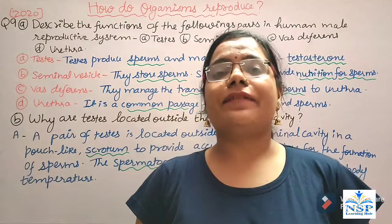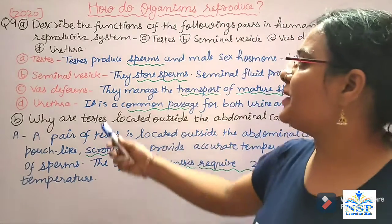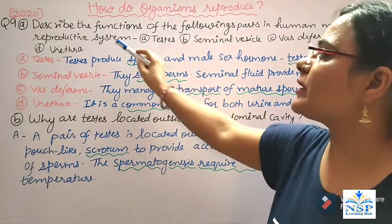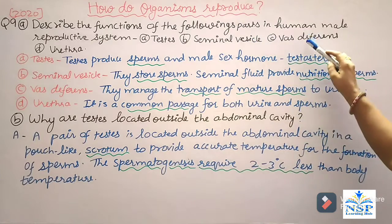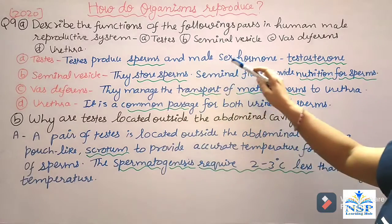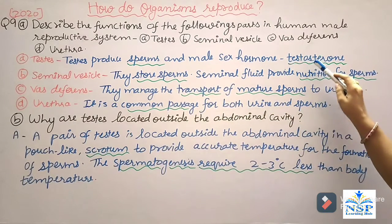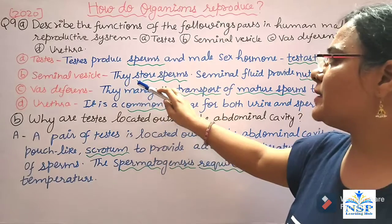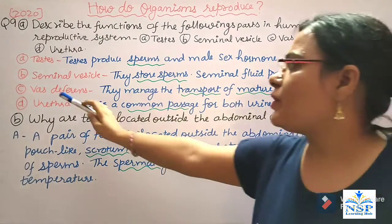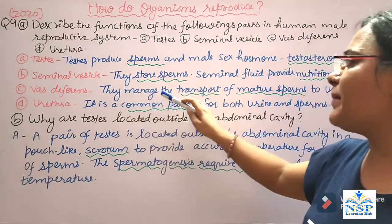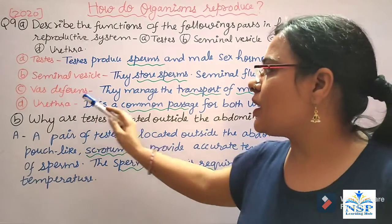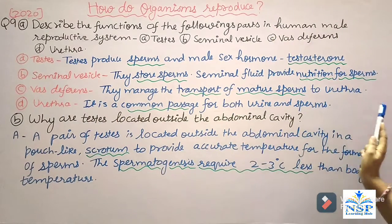Our next important question is: describe the functions of the following parts in the human male reproductive system — testes, seminal vesicles, vas deferens, and urethra. Testes produce sperms and the male sex hormone called testosterone. Seminal vesicles store sperms, and seminal fluid provides nutrition for sperms. Vas deferens manages the transport of mature sperms to the urethra. The urethra is a common passage for both urine and sperms.